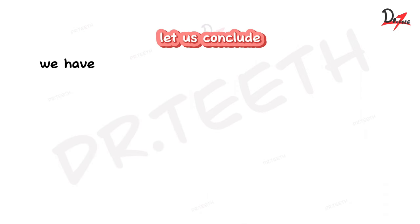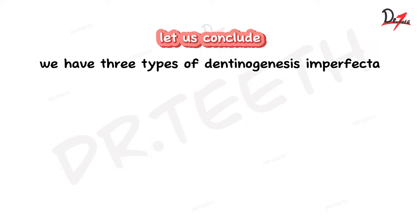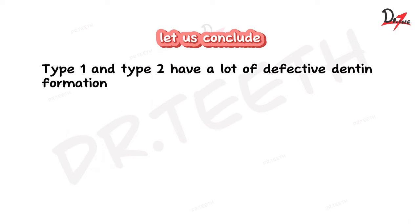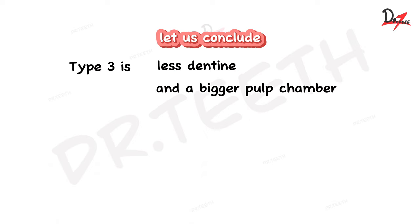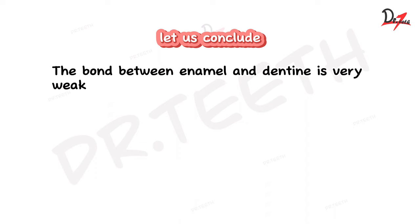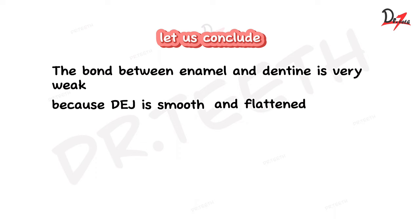To conclude: we have three types of Dentinogenesis imperfecta. Type one and type two have excessive defective dentine formation leading to obliteration of the pulp. Type three is the opposite, with less dentine and a bigger pulp chamber giving a shell teeth appearance on radiograph. The bond between enamel and dentine is very weak because the DEJ is smooth and flattened instead of scalloped.